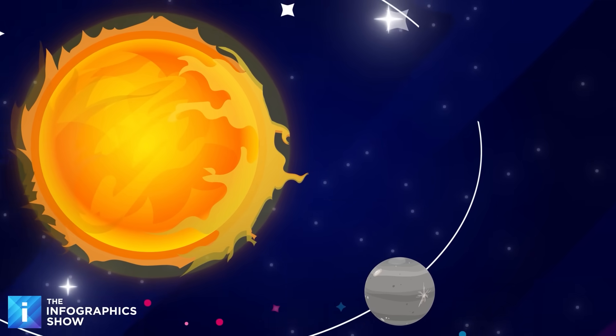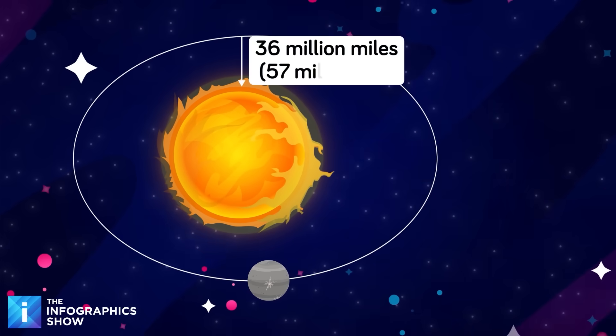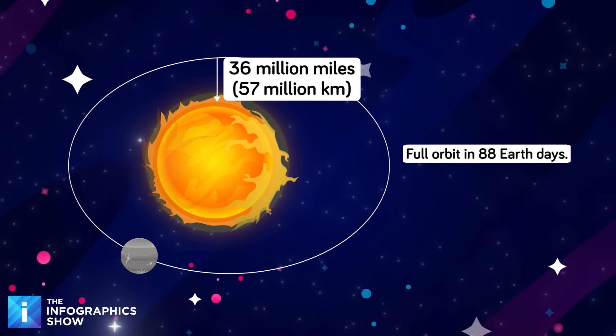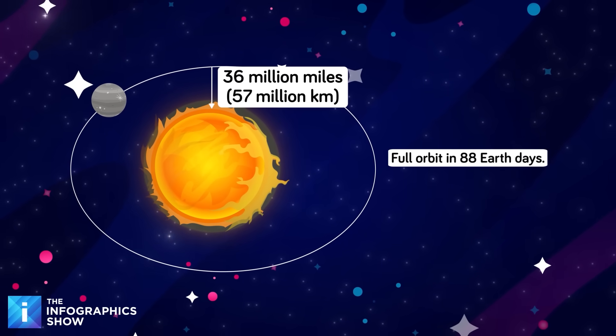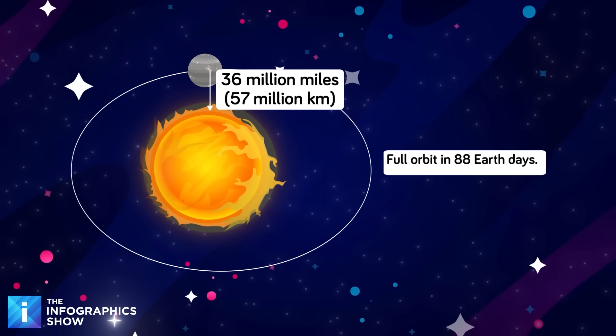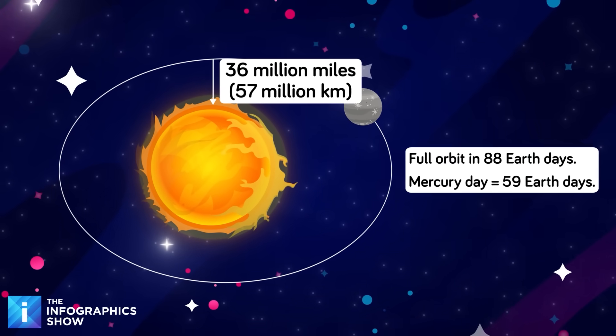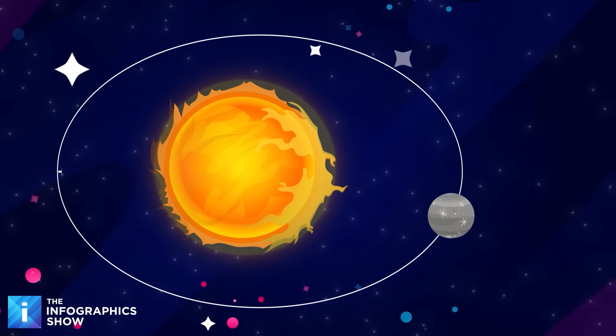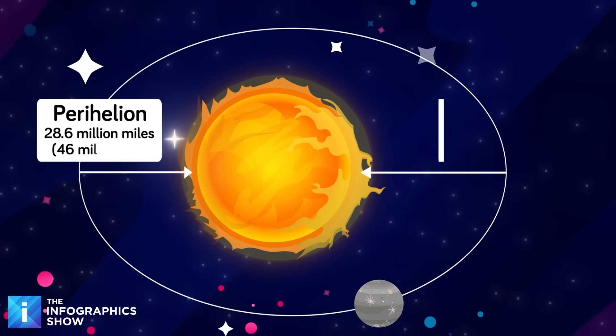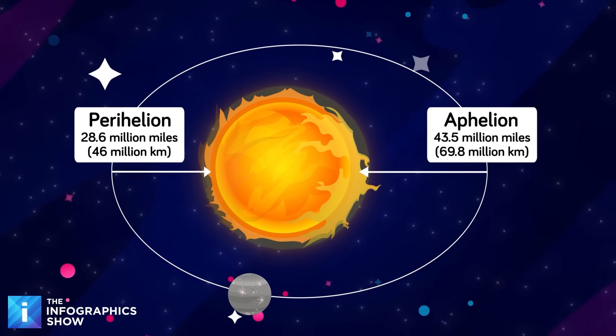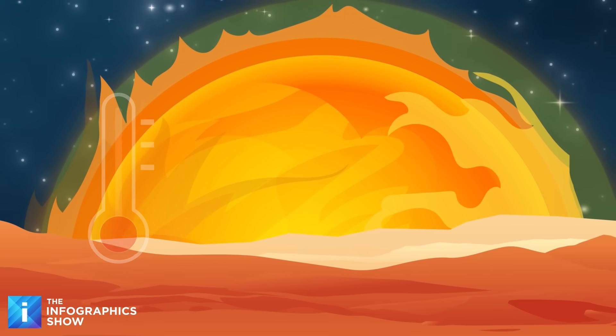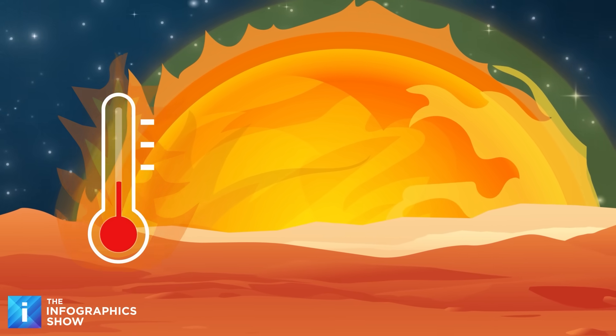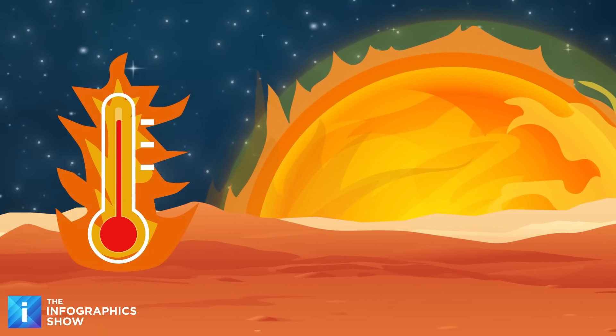Mercury orbits the sun at an average distance of 36 million miles, completing a full orbit in just 88 Earth days, making it the planet with the shortest year in the solar system. A single rotation, or one Mercury day, takes 59 Earth days. Its orbit is also highly elliptical, ranging from about 28.6 million to 43.5 million miles from the sun. There is no atmosphere to speak of, and so no breathable air. There are also no moons due to the strong gravitational pull of the sun.